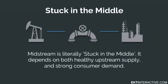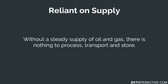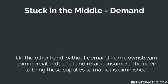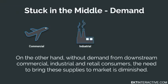Midstream is literally stuck in the middle. It depends on both healthy upstream supply and strong consumer demand. Without a steady supply of oil and gas, there is nothing to process, transport, and store. On the other hand, without demand from downstream commercial, industrial, and retail consumers, the need to bring these supplies to market is diminished.